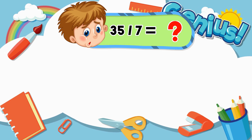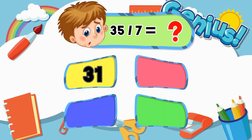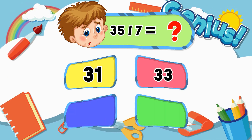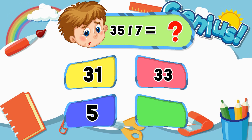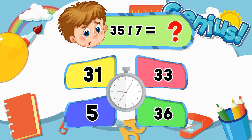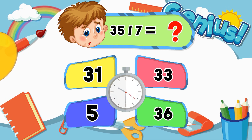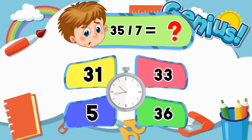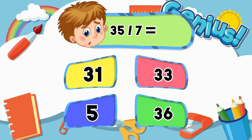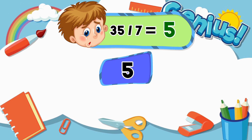What is thirty-five divided by seven? Thirty-one, thirty-three, five, thirty-six. Five.